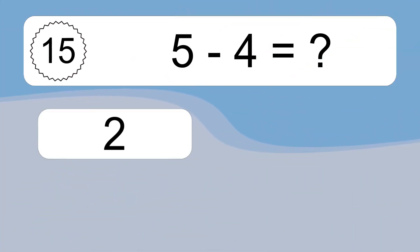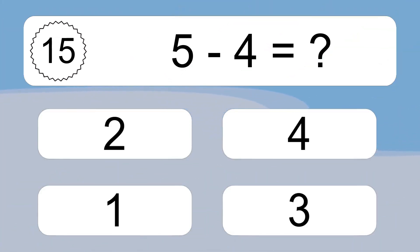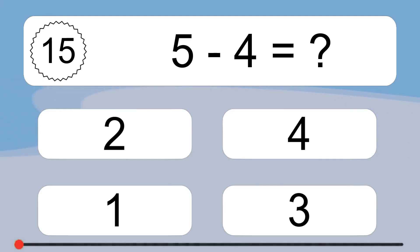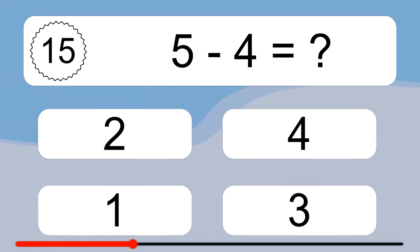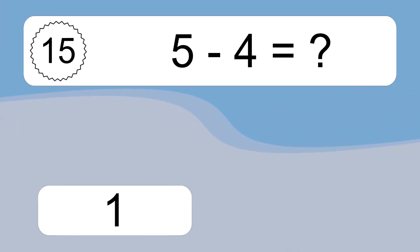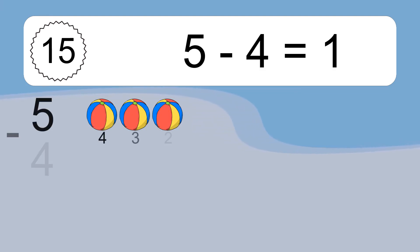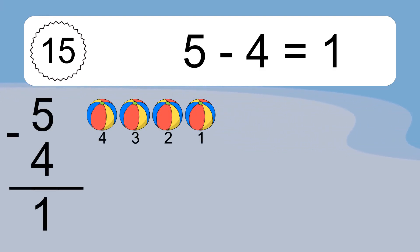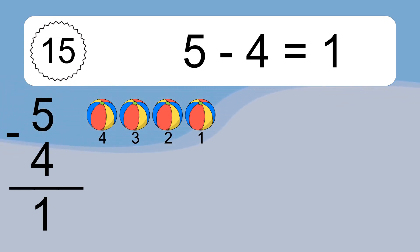5 minus 4 equals what? 5 minus 4 equals 1. Let's count it. 4, 3, 2, 1.